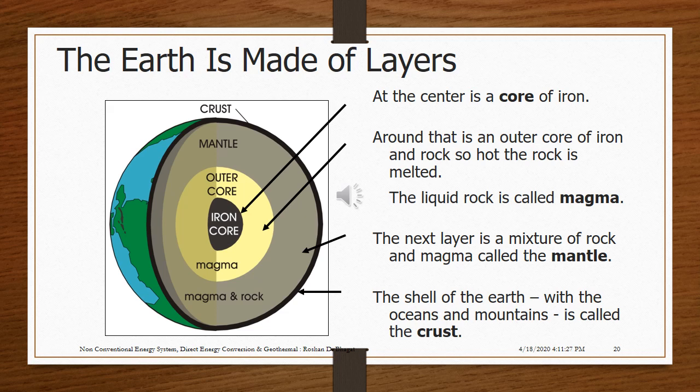The earth is made of layers. At the center is a core of iron. Around that is an outer core of iron and rock so hot the rock is melted — this liquid rock is called magma. The next layer is a mixture of rock and magma called the mantle. The outermost shell of the earth with the oceans and mountains is called the crust.